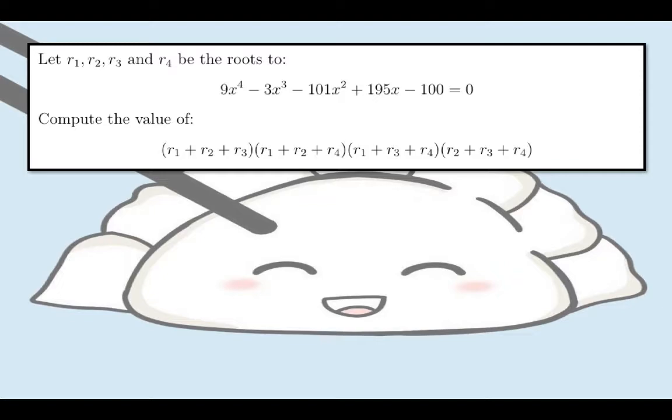Compute the value of quantity r sub 1 plus r sub 2 plus r sub 3 times the quantity r sub 1 plus r sub 2 plus r sub 4 times the quantity r sub 1 plus r sub 3 plus r sub 4 times the quantity r sub 2 plus r sub 3 plus r sub 4.